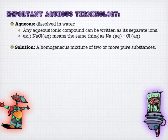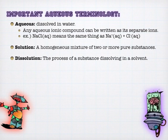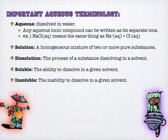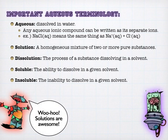A solution is simply a homogeneous mixture. Dissolution is the process of dissolving. Whether something is soluble or insoluble refers to how much of it can dissolve in a given solvent. That sounds subjective, but there are objective ways of determining whether something is soluble, insoluble, or even partially soluble — which we'll talk about in a later lesson.